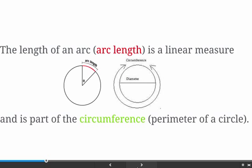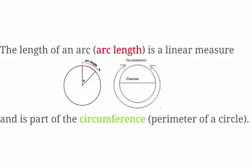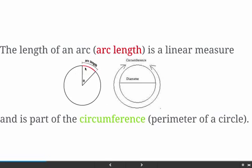Arc length is a linear measure — it's how long the arc is in linear units like inches, centimeters, or meters. It is part of the circumference of the circle. For example, if a circle had a circumference of 4π inches, an arc length might be something like half π inches.